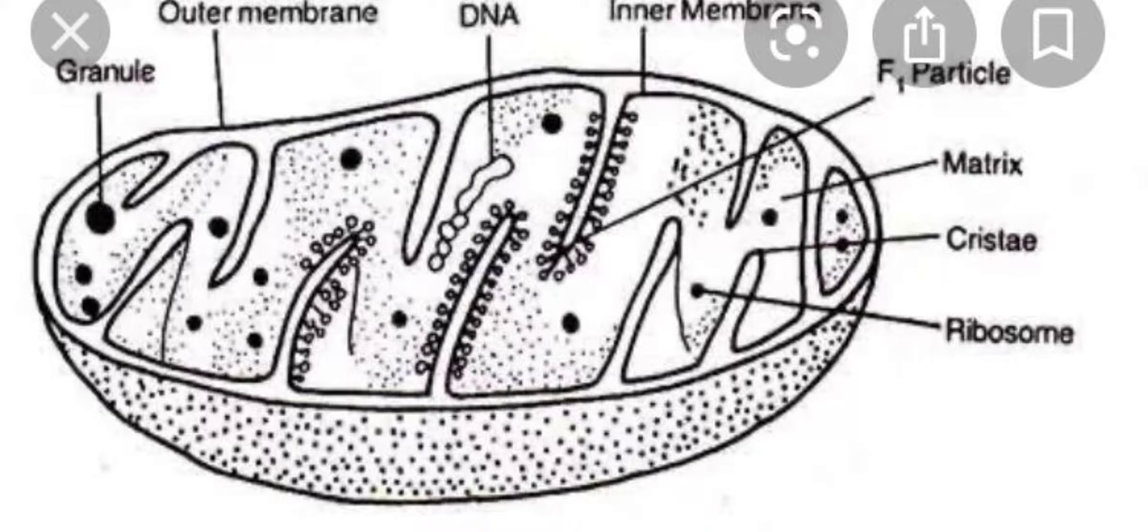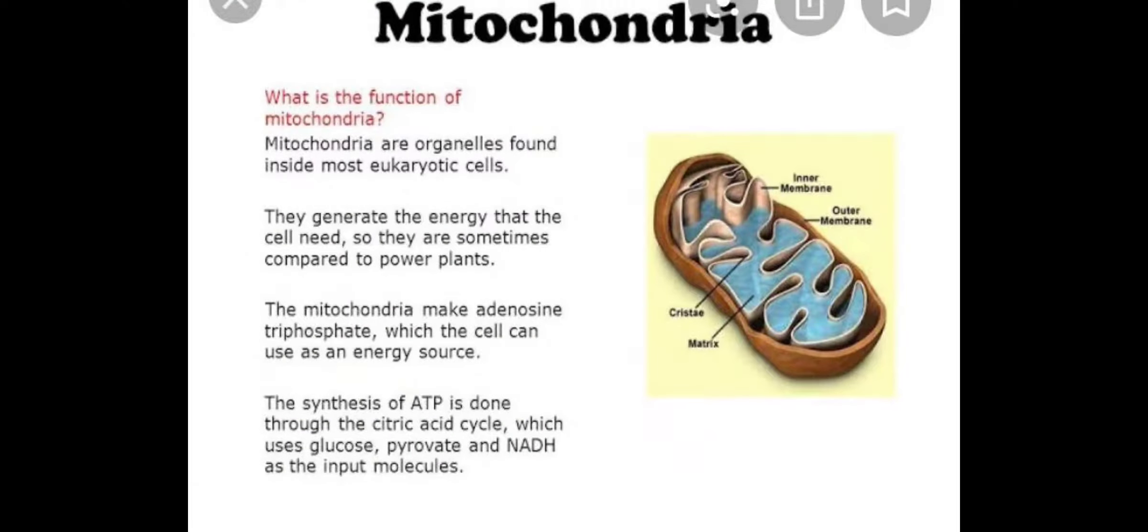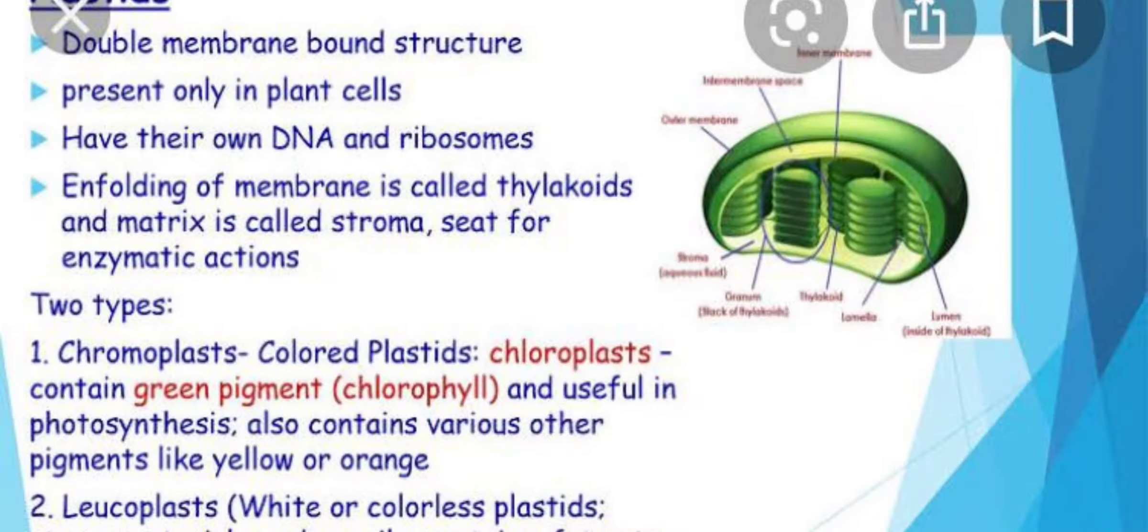Now next organelle is the plastids. These are also autonomous cell organelles and they are present basically in plant cells. They have their own DNA and ribosomes which are again 70S type. The most common plastid that you have learned in your 9th standard is the chloroplast, which is a green pigment containing plastid, that is chlorophyll, and it is involved in photosynthesis.